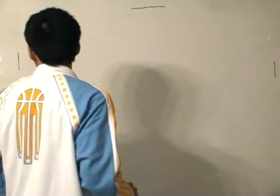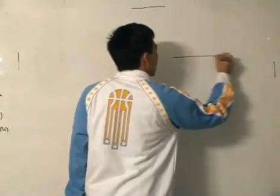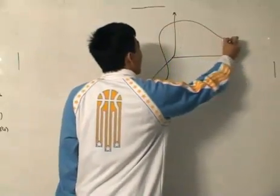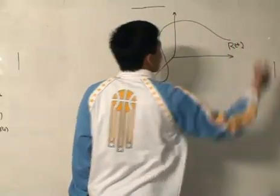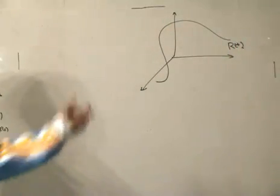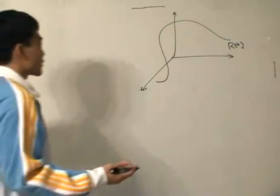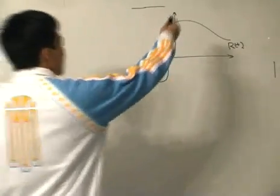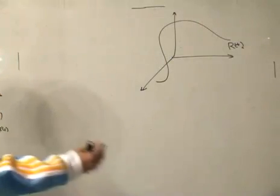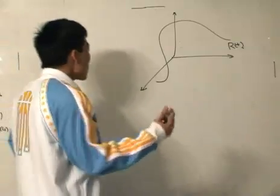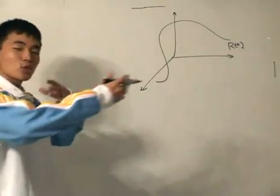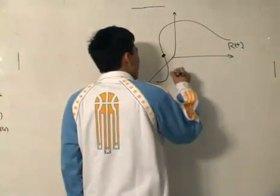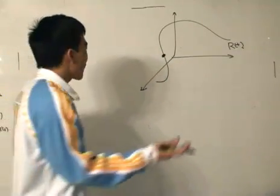We draw the coordinate axis and we have a curve defined by the position vector R of C. The line integral requires a vector field and a position vector. We have the position vector, and the vector field exists somewhere in the space around the curve.